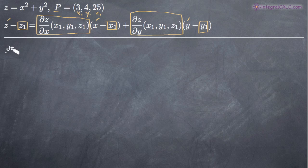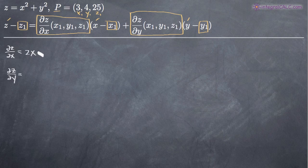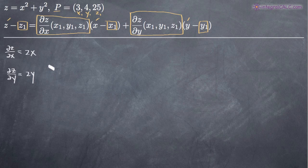Let's take the partial derivatives of z with respect to x and y. When we take the partial derivative of z with respect to x, we treat x as the variable and hold y constant. The derivative of x squared plus y squared gives us 2x, because the derivative of y squared is 0 — y is treated as a constant. Similarly, the partial derivative of z with respect to y is just 2y, because the derivative of x squared is 0.